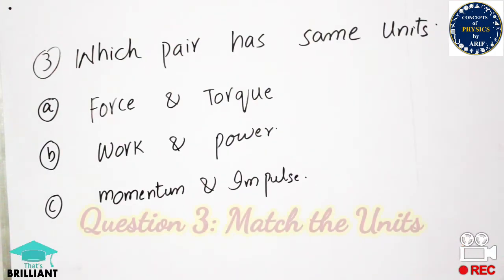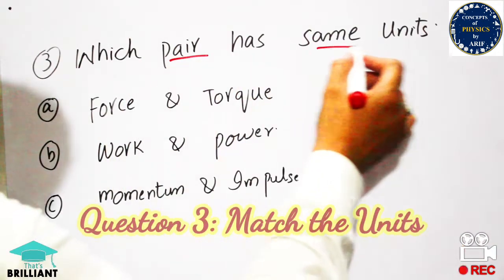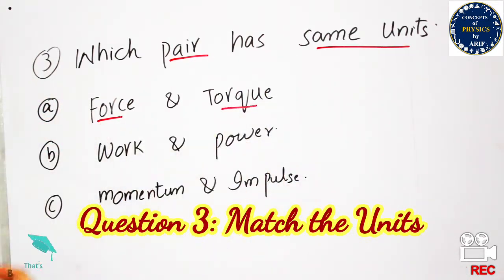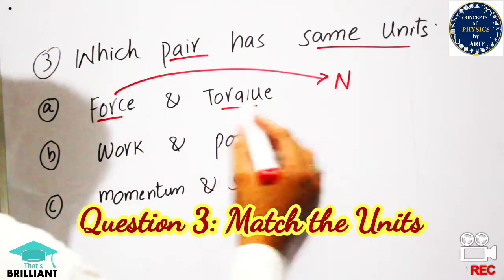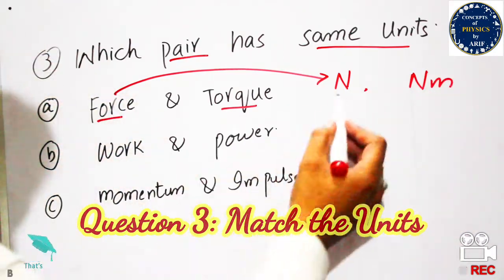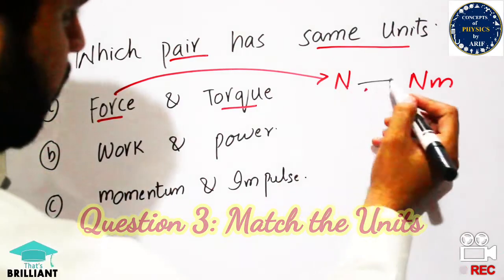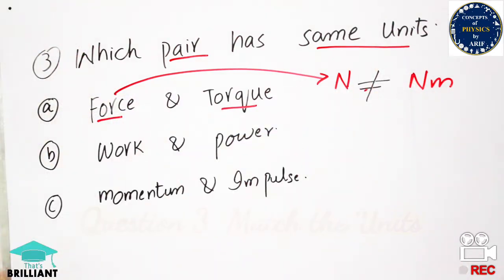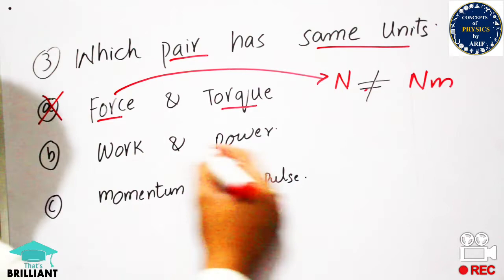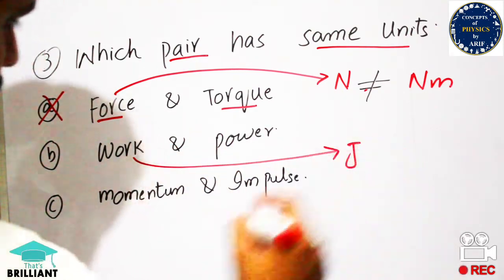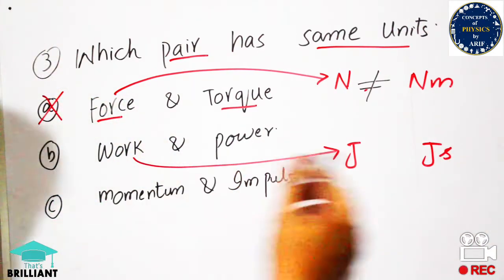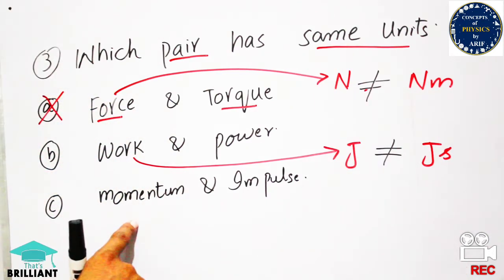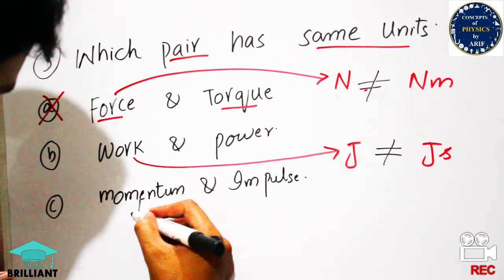The next question gives pairs of quantities to match by units. The unit of force is Newton, and the unit of torque is Newton·meter (which is Joule), so force and torque are not equal — not the right answer. Work has units of Joule, and power has units of Joule per second, so work and power are not equal either. The correct pair to check is momentum and impulse.